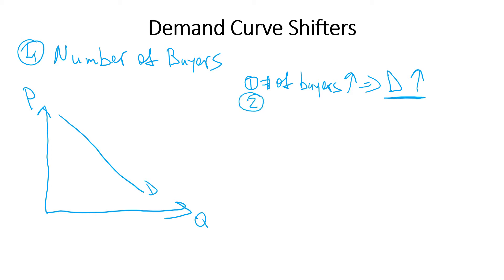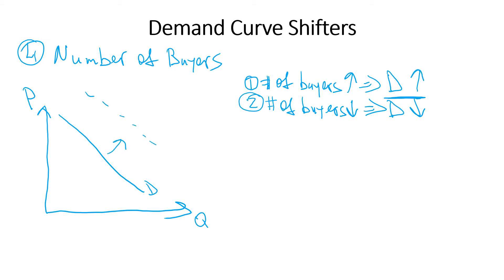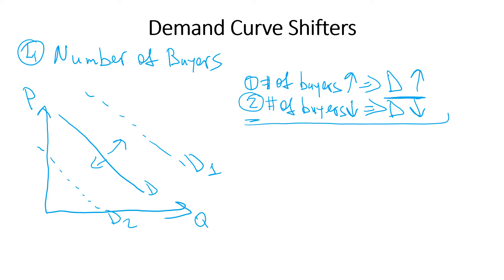Now that we don't have students in town or football fans at games, if the number of buyers is decreasing on the market, then demand for goods and services is going to decrease. We increase demand to Demand 1, and for the second case we shift it down and to the left — Demand 2.